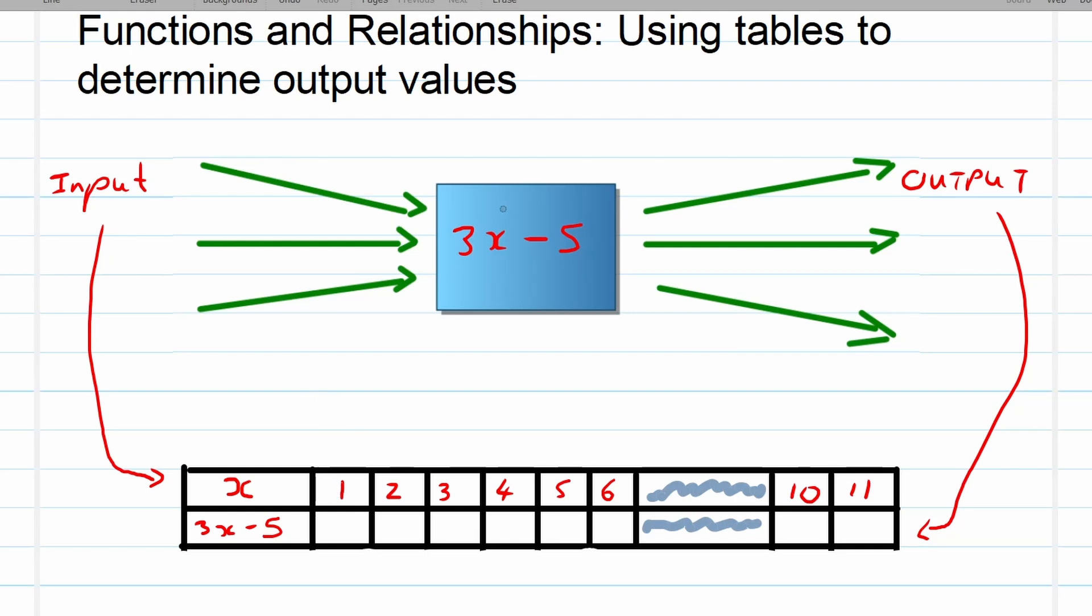Just like with the flow diagram, our 1 will be put instead of x right over there and then we'll get the output value. The same here, 2 will be put instead of x, then 3, then 4, then 5 and 6, and then 10 and then 11. Let's see. If x is 1, this will become 3 times 1 minus 5, our output value is negative 2. If x is 2, 2 times 3 is 6, 6 minus 5 is 1.